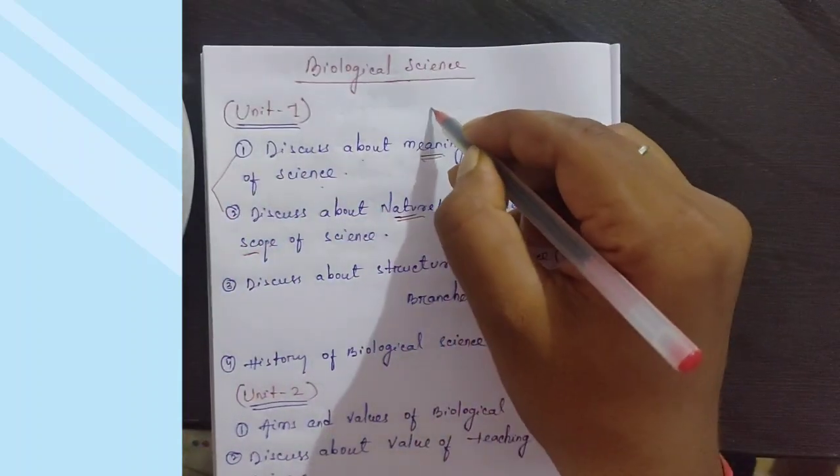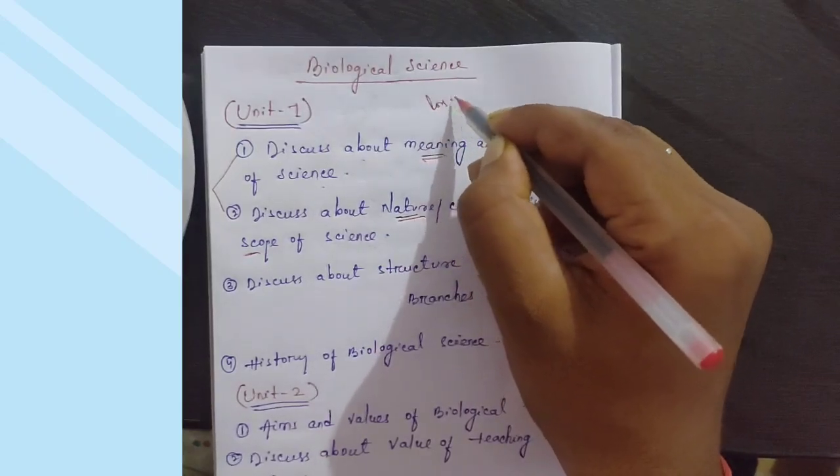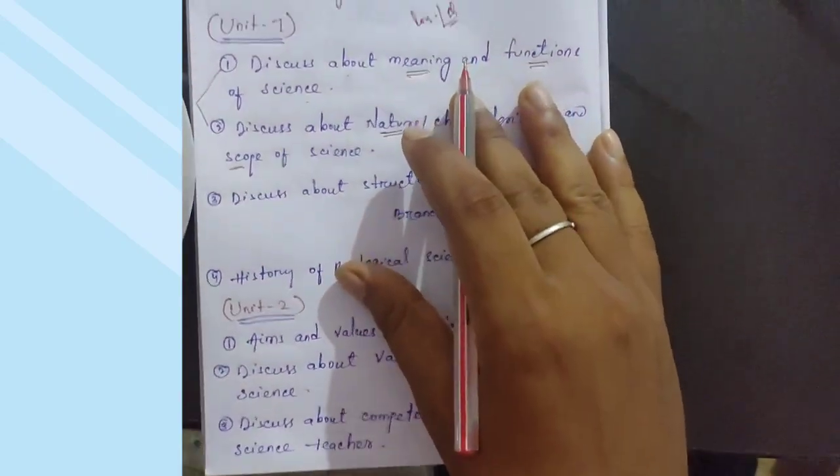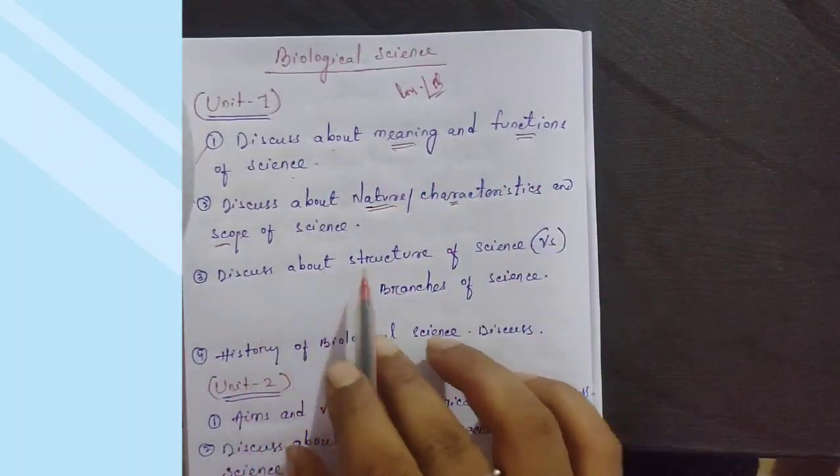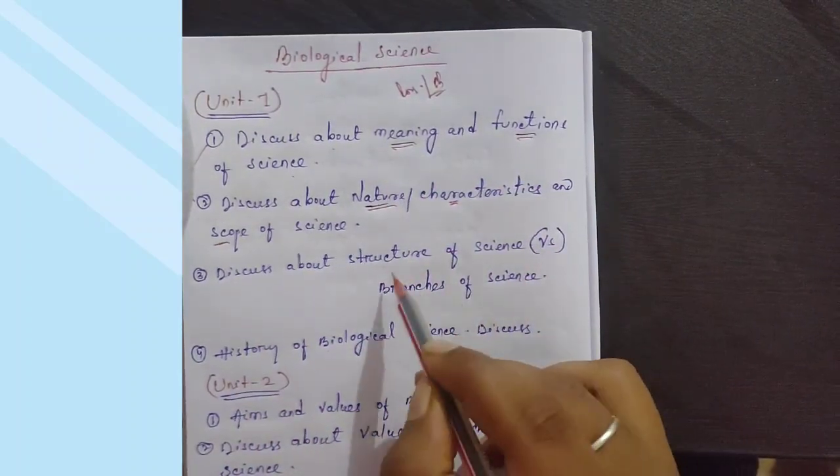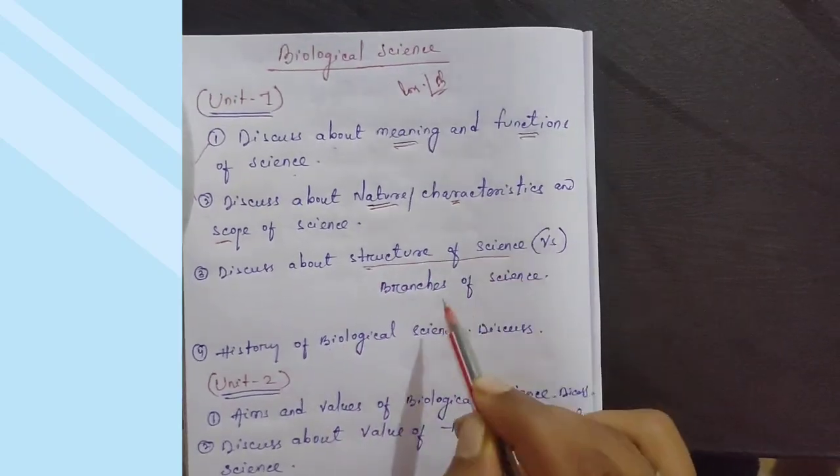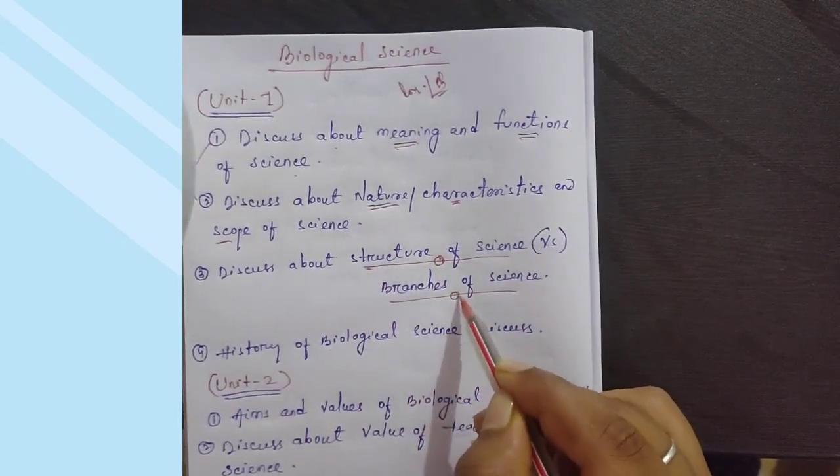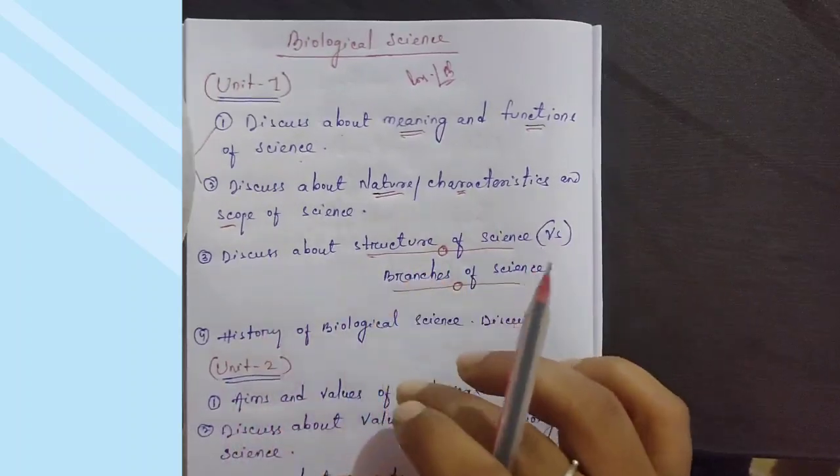You can write long answers or short notes for these topics. Next, discuss the structure of science or the branches of science. For structure of science or branches of science, you can write short notes or long questions depending on what's asked.